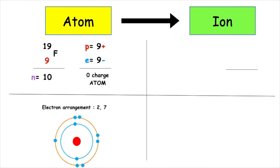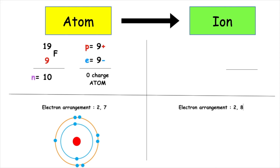Fluorine has the electron arrangement 2-7. It's got 7 electrons in its outermost occupied energy level. To achieve stability, it wants to gain 1 electron to have the electron arrangement 2-8. This means it's got more electrons than protons, and therefore the charge on the fluorine when it becomes an ion — which is known as a fluoride ion — would be 1-.